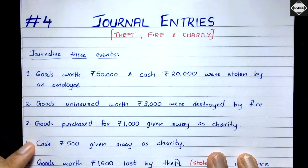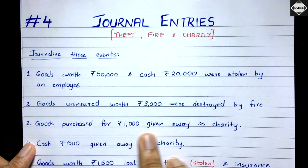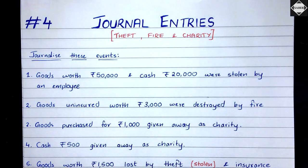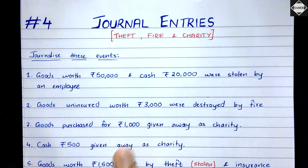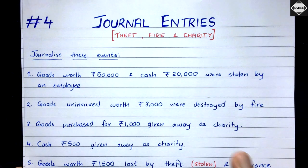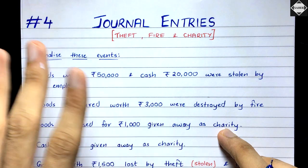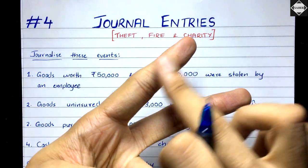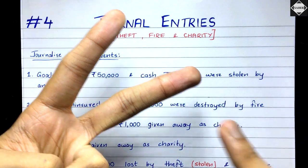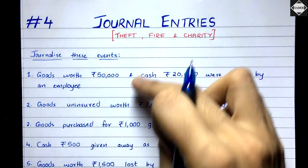The third transaction: goods purchased for rupees 1,000 given away as charity. We had stock, and from that stock we gave away 1,000 worth of goods to charity. Charity is an expense — it's like a loss to us as we are not gaining anything from it. We have to recognize the charity expense, and the goods are no longer in the business, so purchase account is decreasing. Charity account — we have to recognize this expense just like we recognized the loss in earlier entries.